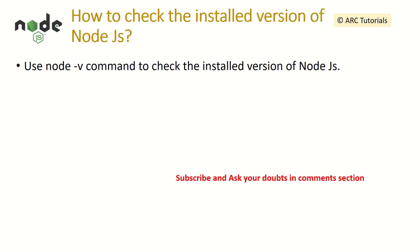How do you check the installed version of NodeJS on your machine? You can run the command in the terminal: node -v. It will give you the current version installed on your machine. This works on any operating system — be it Linux, Windows, or Mac.